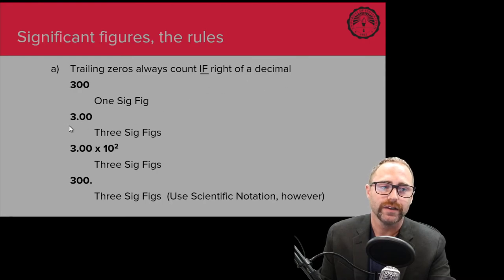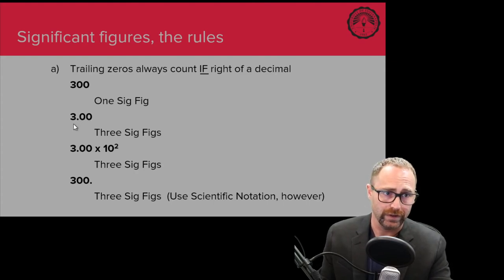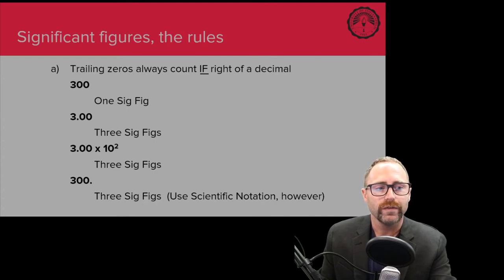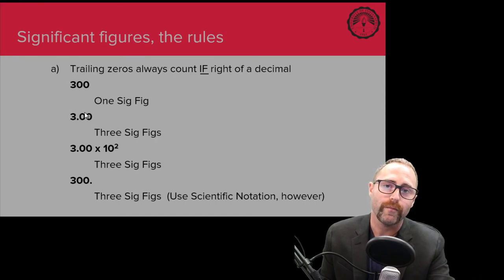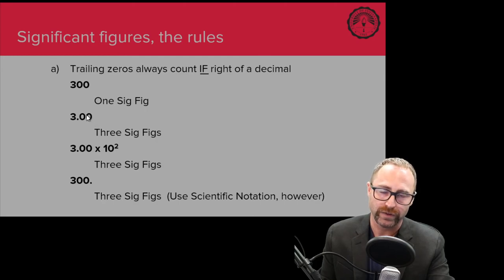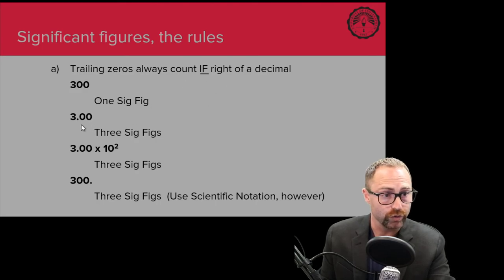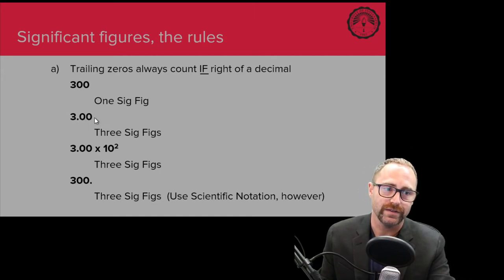Now take 3.00. We've got this 3 that is significant. We're saying we have measured to the tenths and hundredths place and there's nothing there. By putting those zeros to the right of a decimal place beyond a non-zero integer value, we're saying we have measured out to this level and there's nothing there. So these trailing zeros, because they are to the right of a decimal, all three of these digits are significant — this has three significant figures.